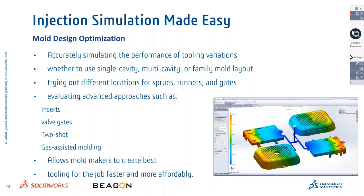Advanced approaches like stacking inserts, valve gates, two-shot molding, and gas-assisted molding are also supported. These technologies help make advanced injection molds — for example, connectors that require metal inserts inside the mold with specific temperature settings. SOLIDWORKS Plastics allows mold makers to create the best tooling for the job faster and more affordably, since reducing the number of prototypes definitely increases margins.